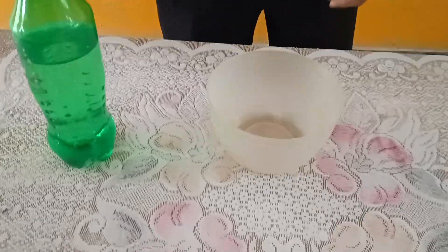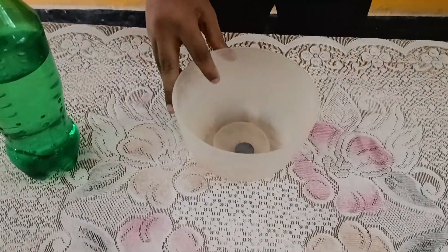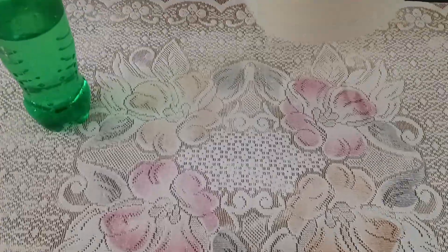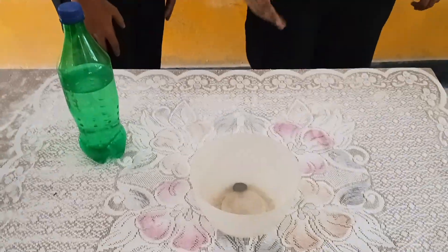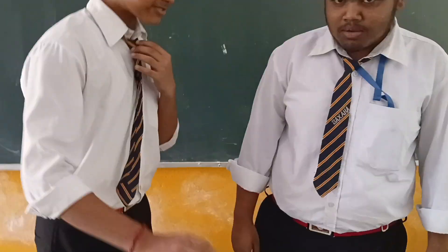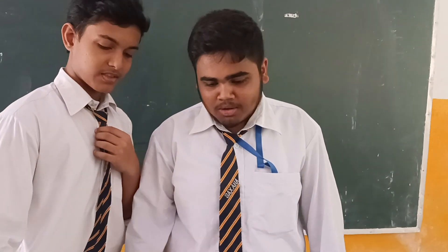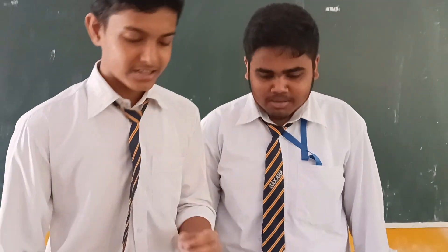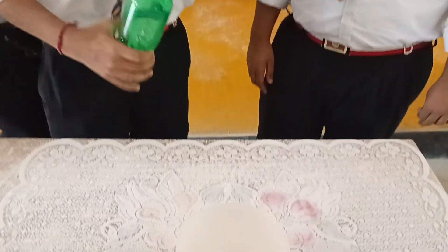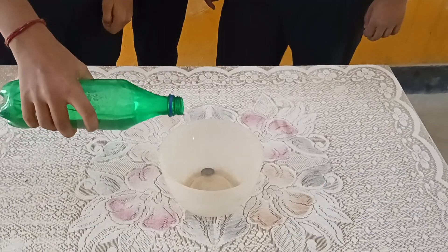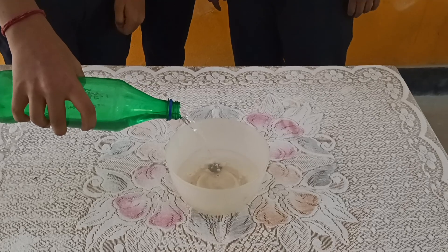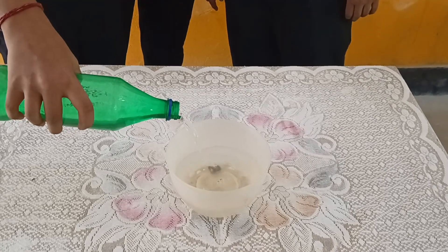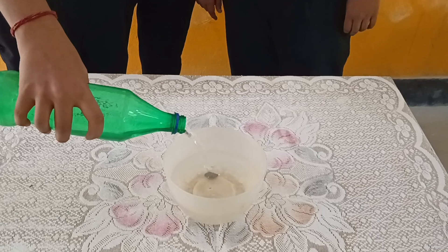First we will place the coin inside the bowl. But after pouring the water, he will be able to see the coin. Now the coin is slowly rising up and he is able to see the coin.